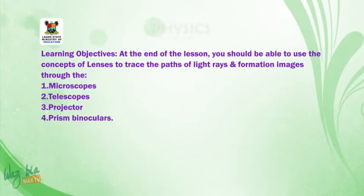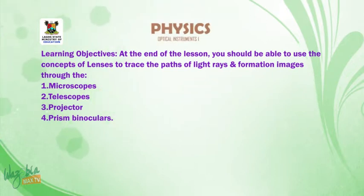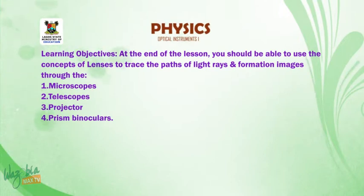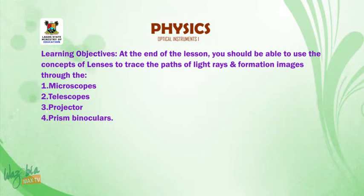At the end of the lesson, you should be able to use the concept of lenses to trace the paths of light rays and formation of images through: one, the microscopes; two, the telescopes; three, the projector; and four, the prism binoculars.